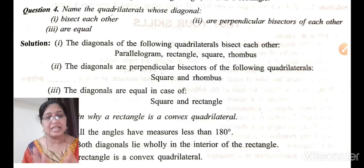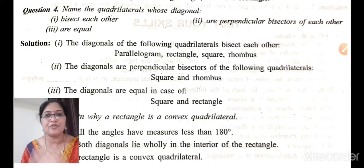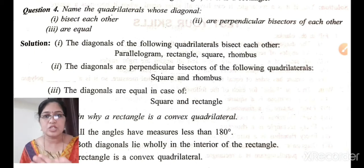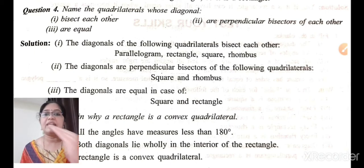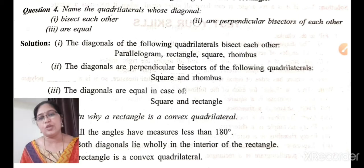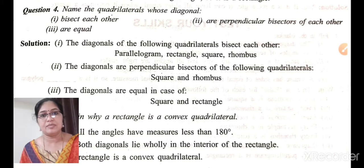Now, which quadrilaterals have equal diagonals? The measure of the diagonals are equal — not just bisecting — for a square and for a rectangle, the diagonals are equal.